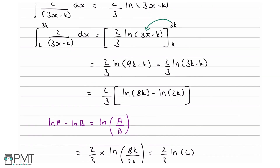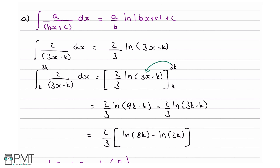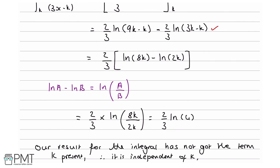This question is worth 4 marks. Your first 2 marks come from getting 2 over 3 ln(3x minus k) as your solution to evaluating the integral, which is why I did it as its own step. Your third mark comes from plugging in your limits of integration to get the substituted expression. Your fourth mark comes from being aware of the log rule and getting the final answer. Bear in mind you don't technically get a mark for your concluding statement, but it is still a good idea to include one, because some mark schemes may request it.